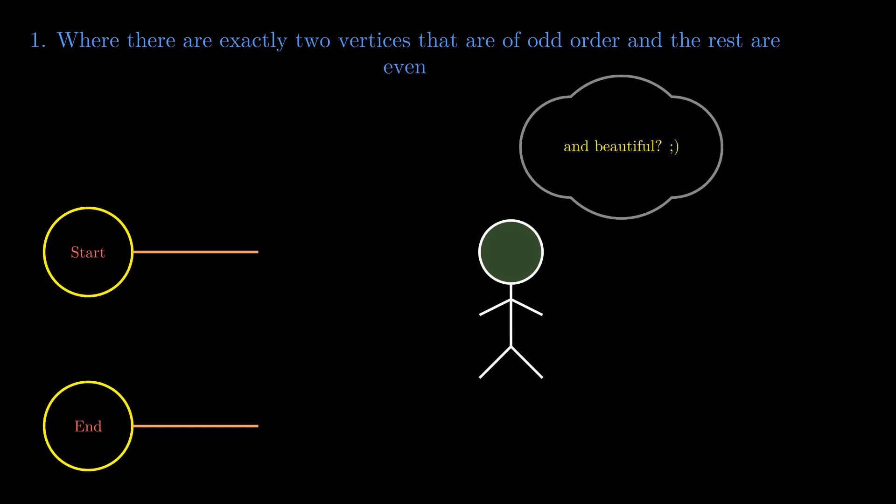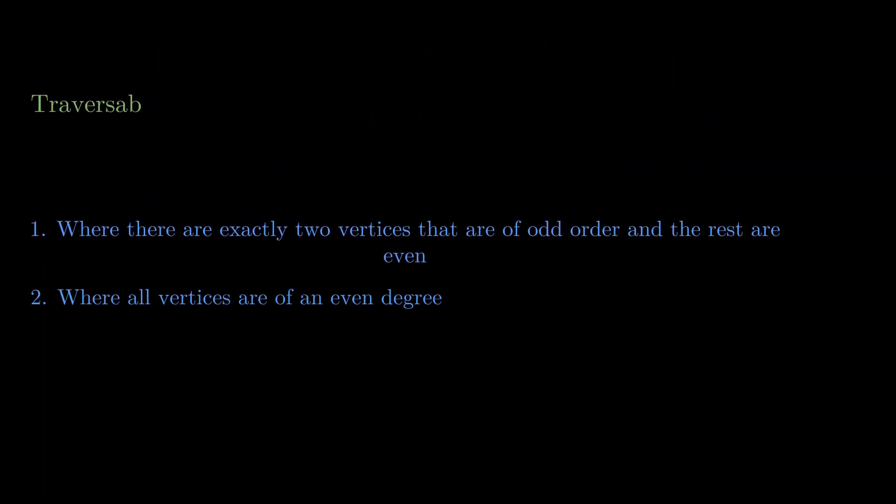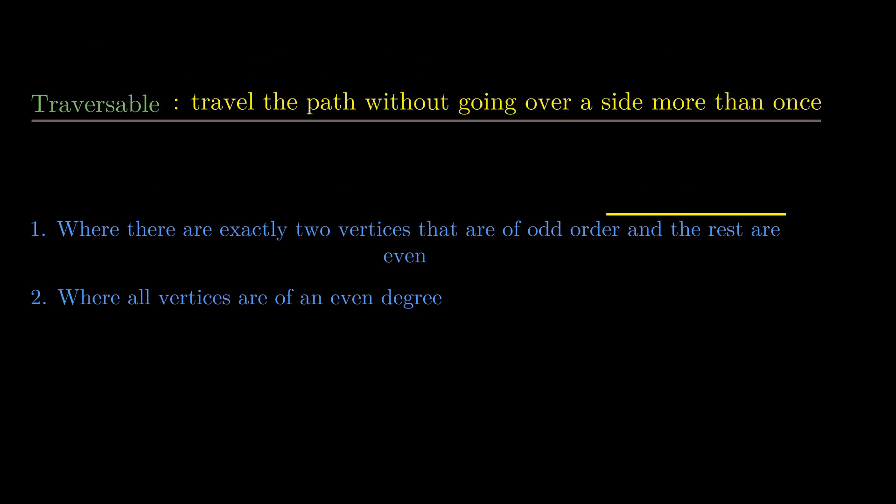And that is why, when you have exactly two vertices that are of odd order, the rest are even, the network is traversable, and you need to start and end at nodes of odd order.